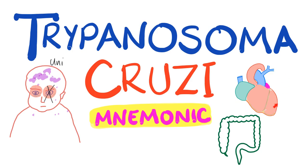Cardiomegaly can happen, cardiomyopathy can happen with arrhythmia and ECG changes, and also megacolon, megaesophagus, splenomegaly, hepatomegaly, etc.